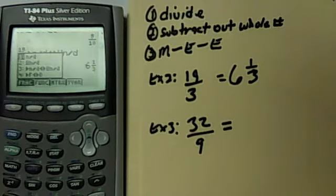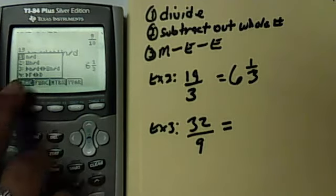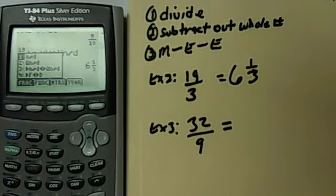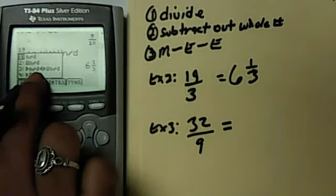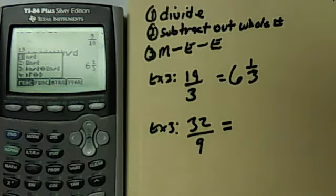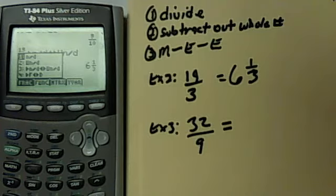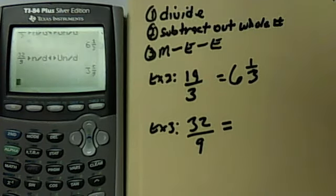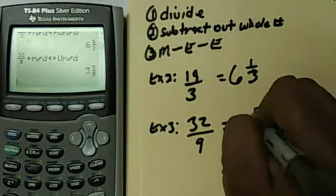So I go back to my alpha y equals menu, and I select number 3. Number 3 is how you change a fraction into a mixed number. So I'm going to hit number 3, or hit enter. As you see that comes up, once I hit enter again, I'm going to get 3 and 5 over 9.